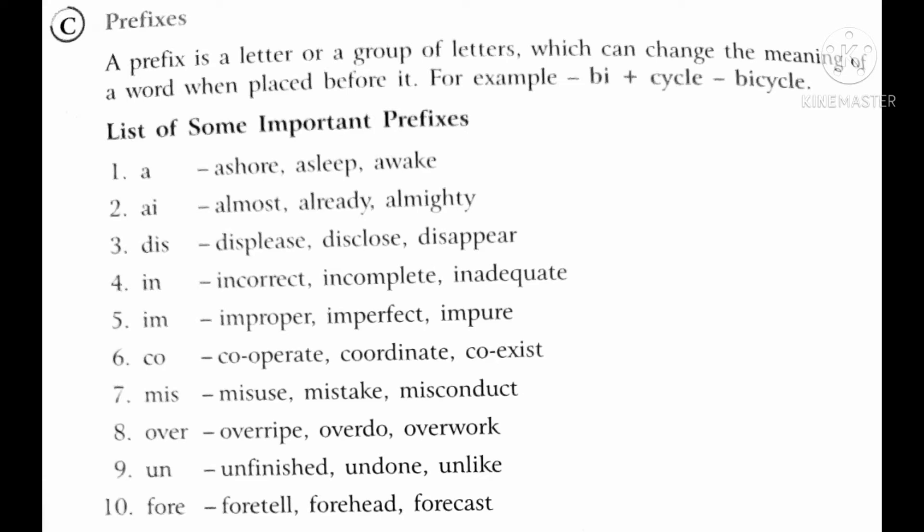So its meaning of that word also changed. You can see in the list of some important prefixes. Like, we have added 'a' before the word 'shore' — S-H-O-R-E — which means land adjoining a non-flowing body of water such as ocean, lake, or pond. After adding 'a' before that word, it changed into 'ashore', which means on the land as opposed to on board.